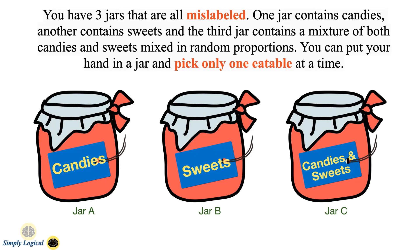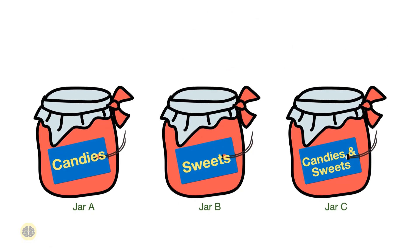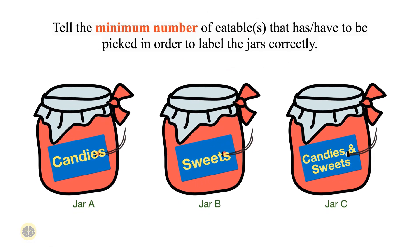You have three jars that are all mislabeled. One jar contains candies, another contains sweets, and the third contains a mixture of both candies and sweets in random proportions. You can pick only one item at a time from a jar. What is the minimum number of items you must pick to label all jars correctly? Assume candies and sweets are identical in shape and cannot be differentiated by touch.